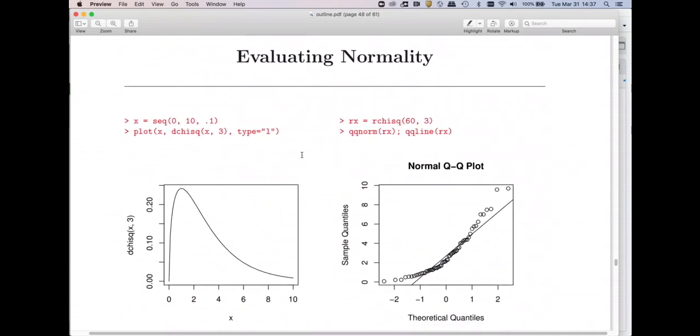Let's look at what bad plots would look like. Let's start with a right skewed distribution. A good right skewed distribution is the chi-square distribution. Remember, the d function with our probability distributions gives you the density.